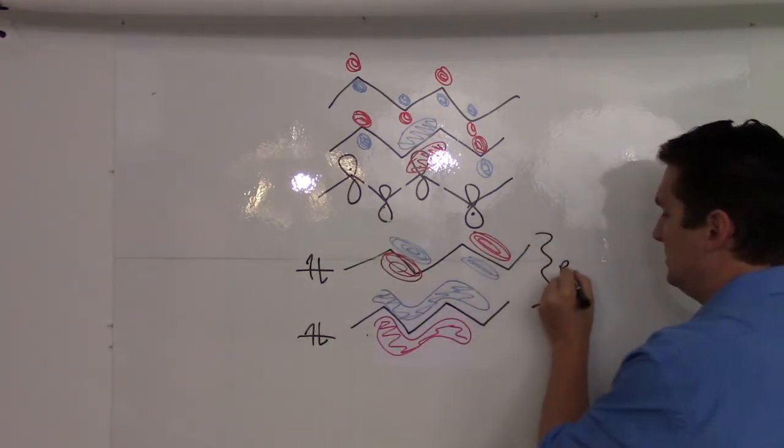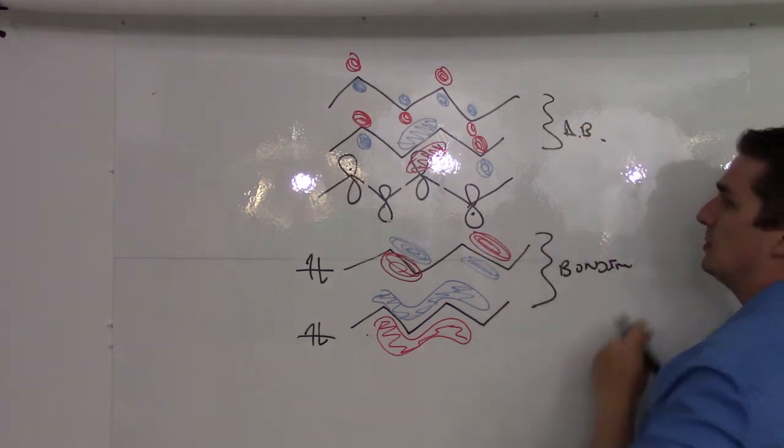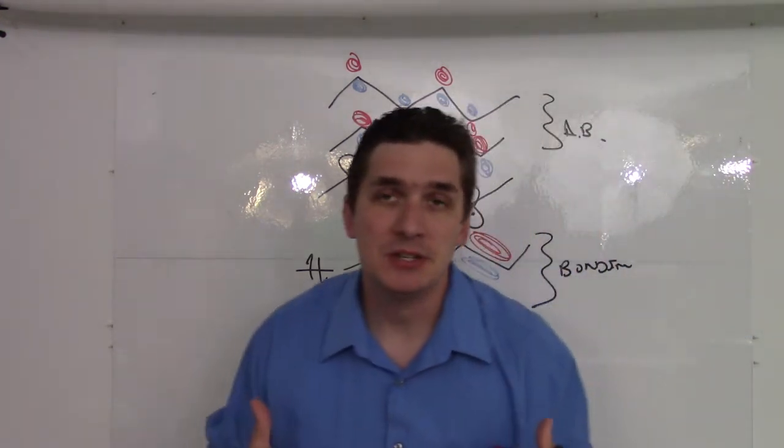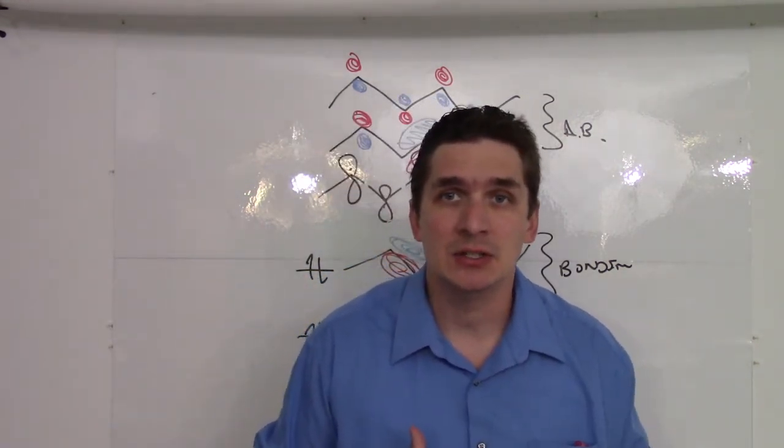These are going to be our bonding, and these are going to be our anti-bonding orbitals. So this is the picture that's really predicted by molecular orbital theory if that's what you're actually going to use.